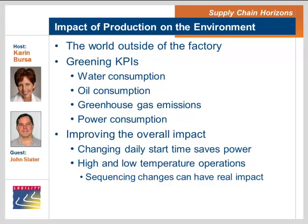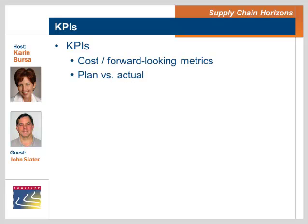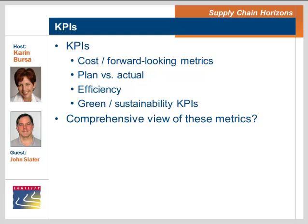That's very interesting, John — this overall discussion about the top KPIs. So you broke it down by cost or forward-looking metrics, then talked about plan versus actual and the variety of ways that can be measured, then the traditional sense of efficiency — if we could produce nonstop in a perfect world, what would that look like? And I love the fact that these green performance indicators or sustainability indicators are becoming increasingly important. Do we have the ability to view these things together in context so that we can really look at our performance from all of these different angles?